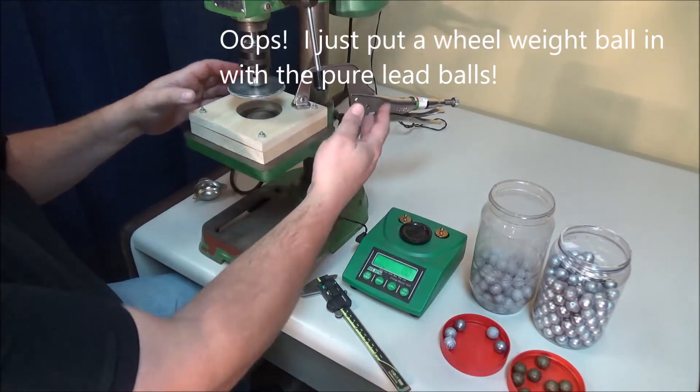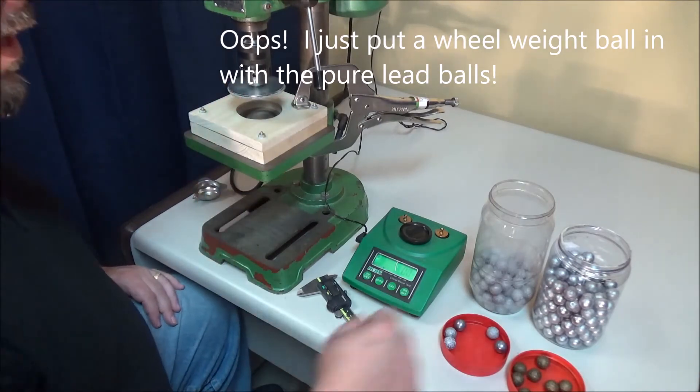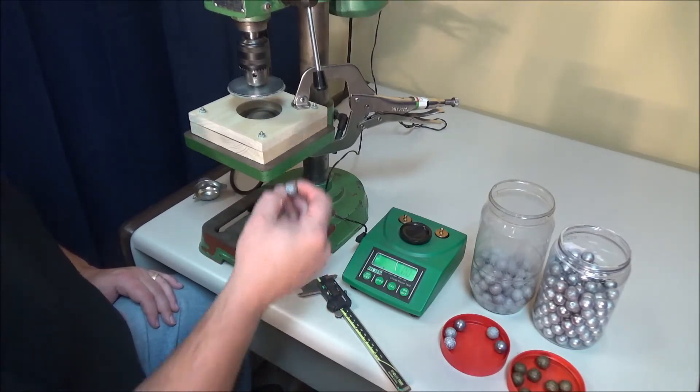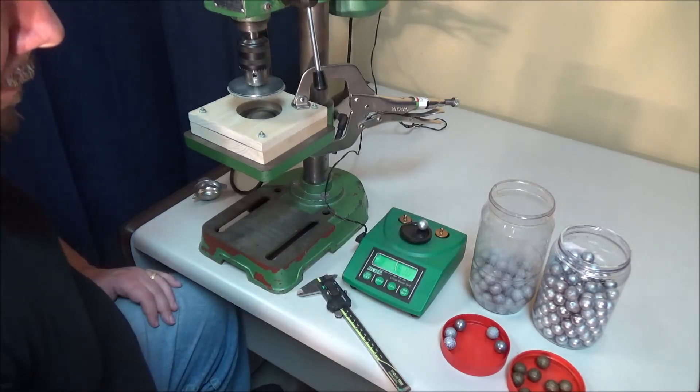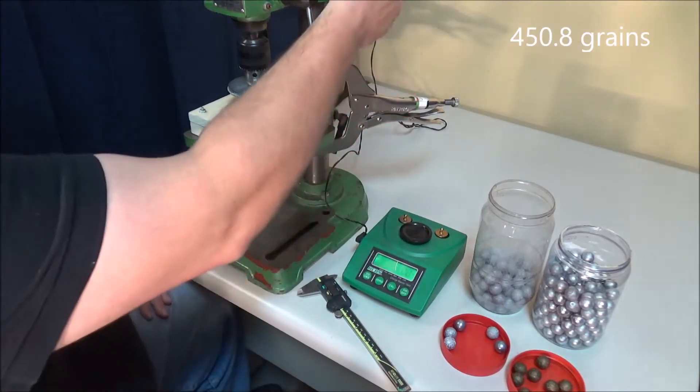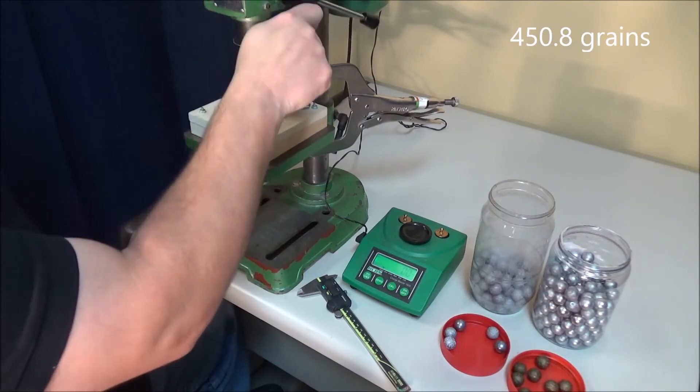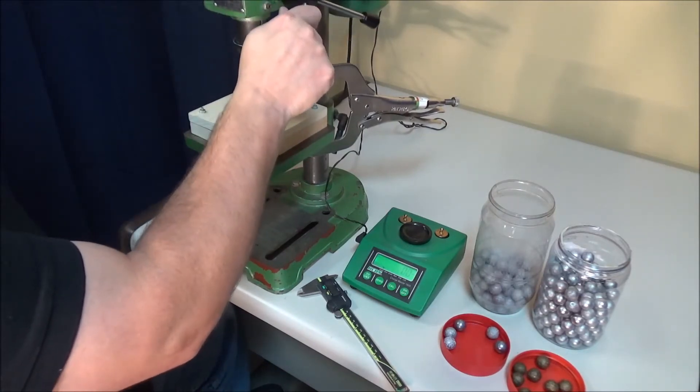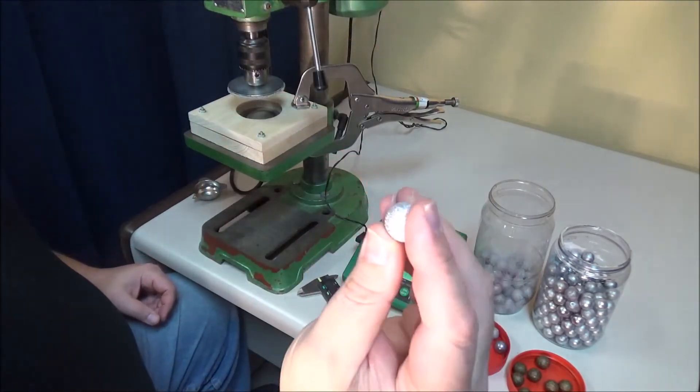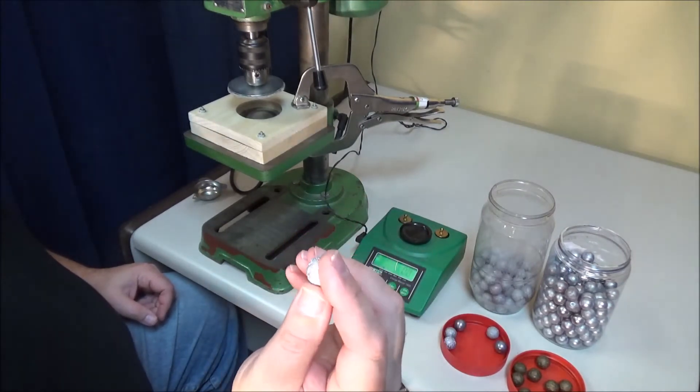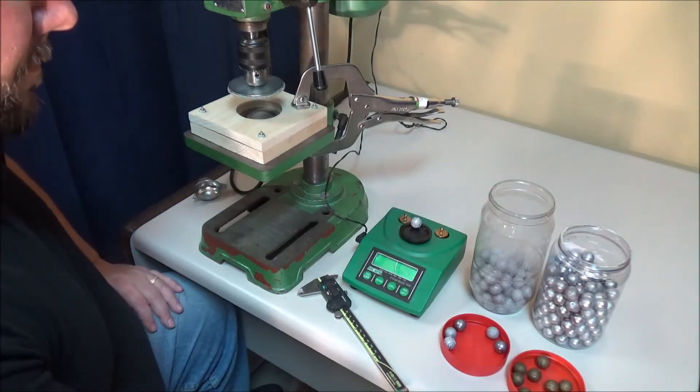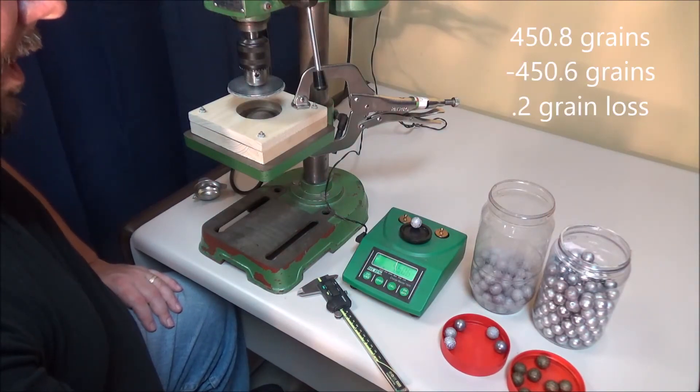The machine, if you were looking in here, there's no lead or anything in here. So it's really not supposed to be removing material from the ball. It's all mechanical displacement. Alright, so let's try another one here. Wheel weight. 450.8. There we go. You can see a little bit where the sprue was there. 450.6, so again, 0.2 grains.